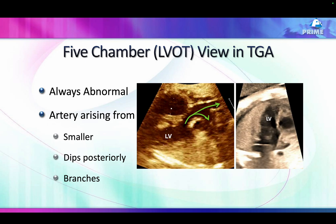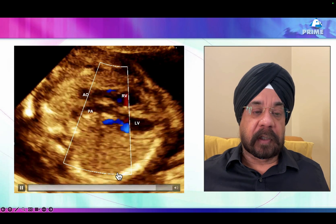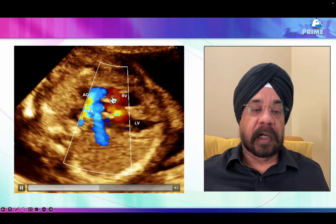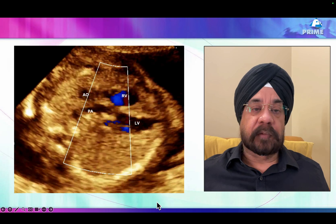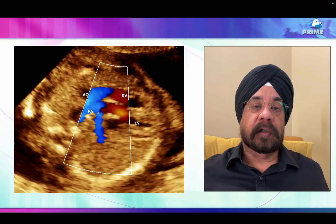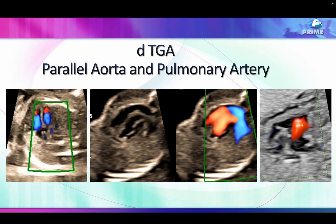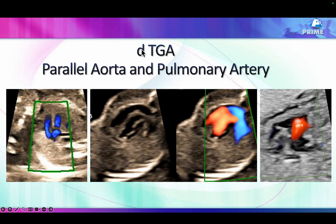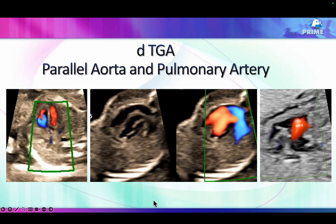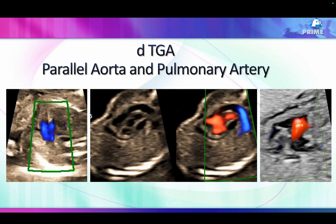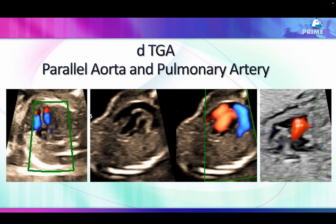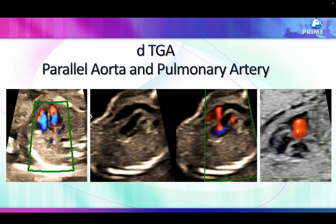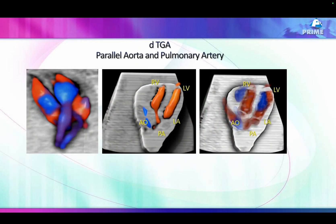This clear-cut view is not seen in most cases. What I'm trying to show you is the branching of the artery which is smaller — the branching vessel is the pulmonary artery, and the aorta is not branching. This is the same sign we use in adult or neonatal echo to diagnose TGA. But when this sign is not clearly visible in fetal echo, we rely on indirect signs. One indirect sign is vessels that are parallel to each other — they are not crossing.